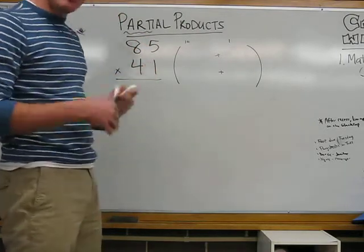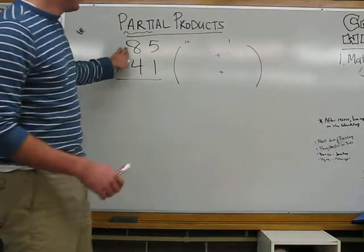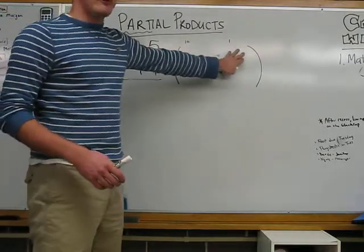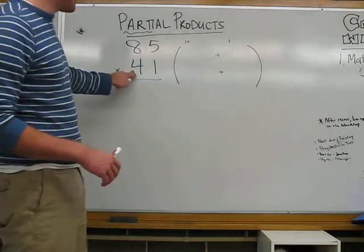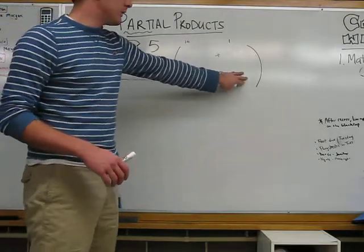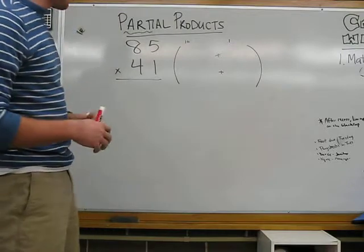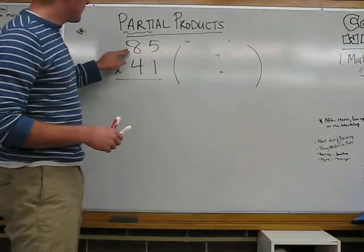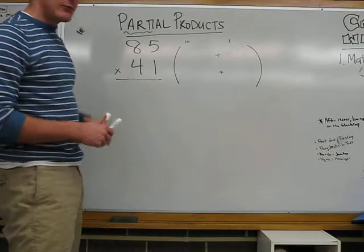Now, let's talk about it. Let's think about what makes 85. 80 plus 5. What makes 41? 40 plus 1. Let's think that. We're going to do this in our head. So, let's start by doing 80 times 40.